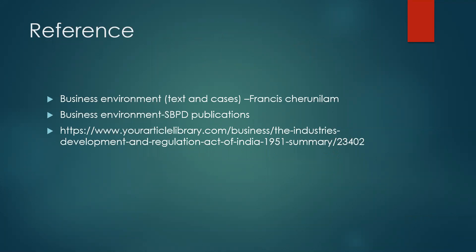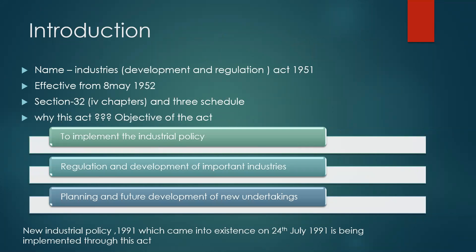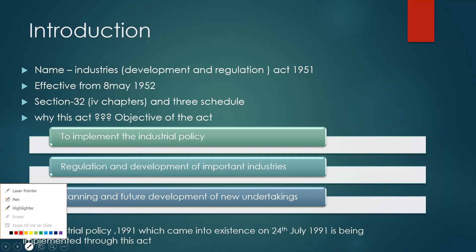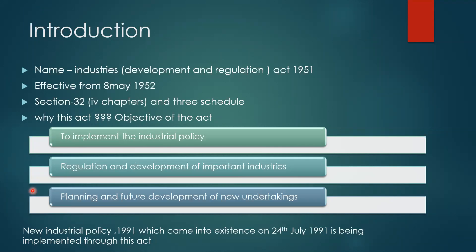Now let's start with today's topic, that is the Industrial Development and Regulation Act 1951. As the name itself says, it is basically an act related to the development and regulation of industries. It came into force from 8th May 1952, under the notification of the central government of India, and was published in the Gazette of India. The act extended to the whole of India, including the state of Jammu and Kashmir, with a view to bringing under central regulation a number of important industries. It is basically an act which has 32 sections, explained under four chapters, and has three schedules.